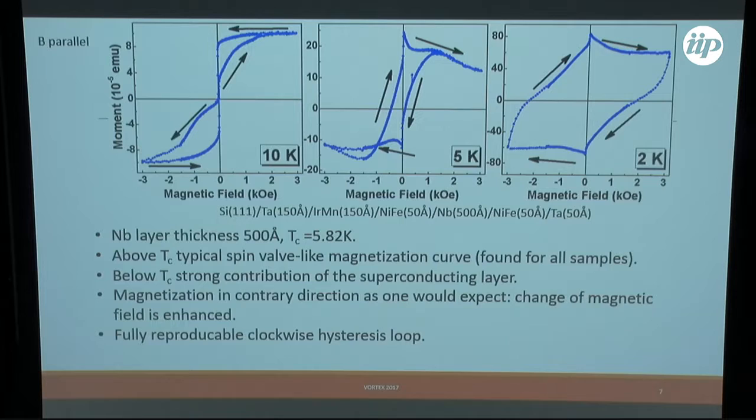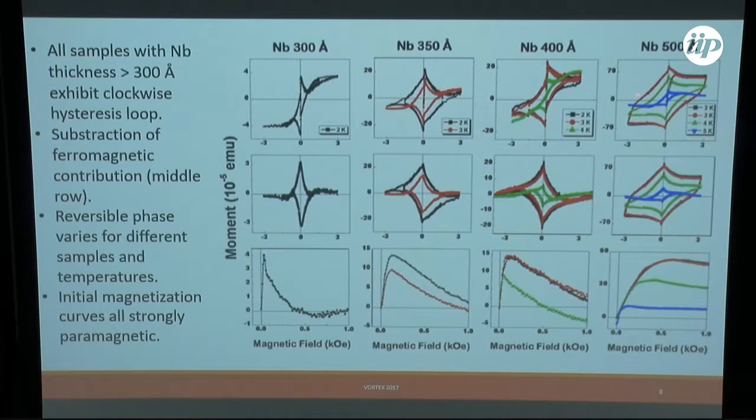In the upper row you can see the magnetization curves of the samples: 300 angstrom, 350, 400, and 500 angstrom for different temperatures. Here you can see the crossing. If you would blow that up you would also see a crossing. You see this in all of the samples that are close to TC.